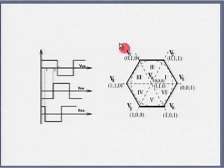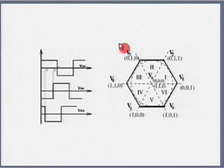When it comes to a star connected load, the phase voltage has a 6-step waveform — hence the name 6-step inverter.